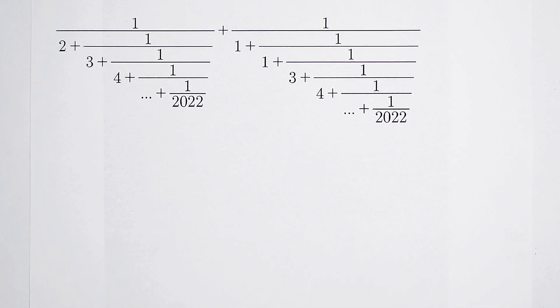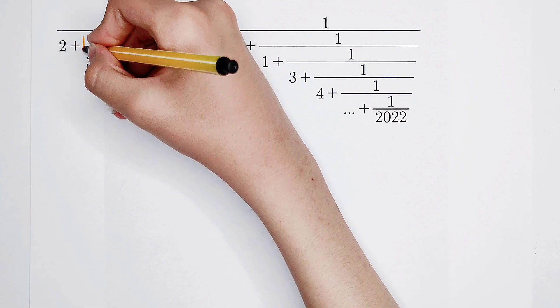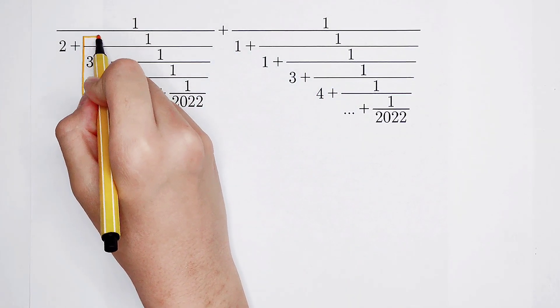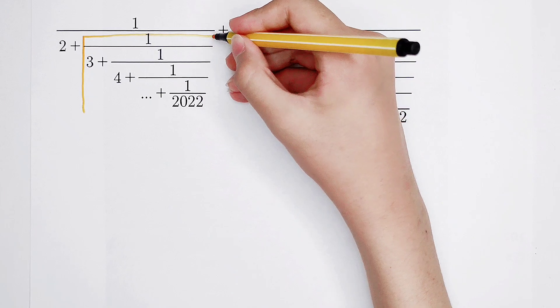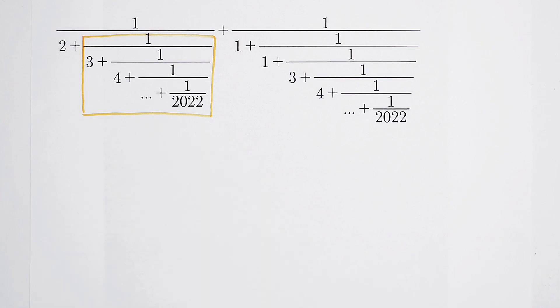Pay attention. Of course, there are this 1 over 3 plus 1 over 4 then plus blah blah blah until 1 over 2022.